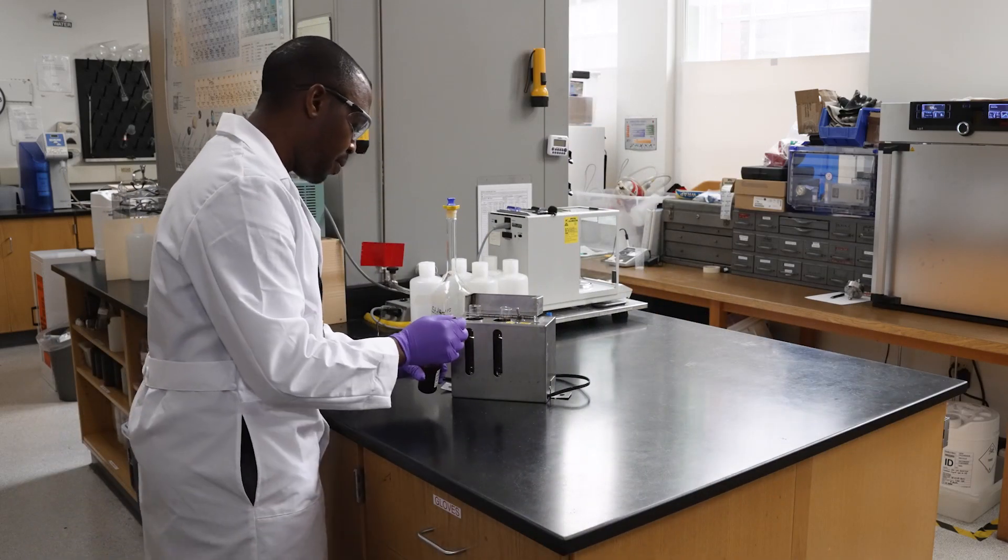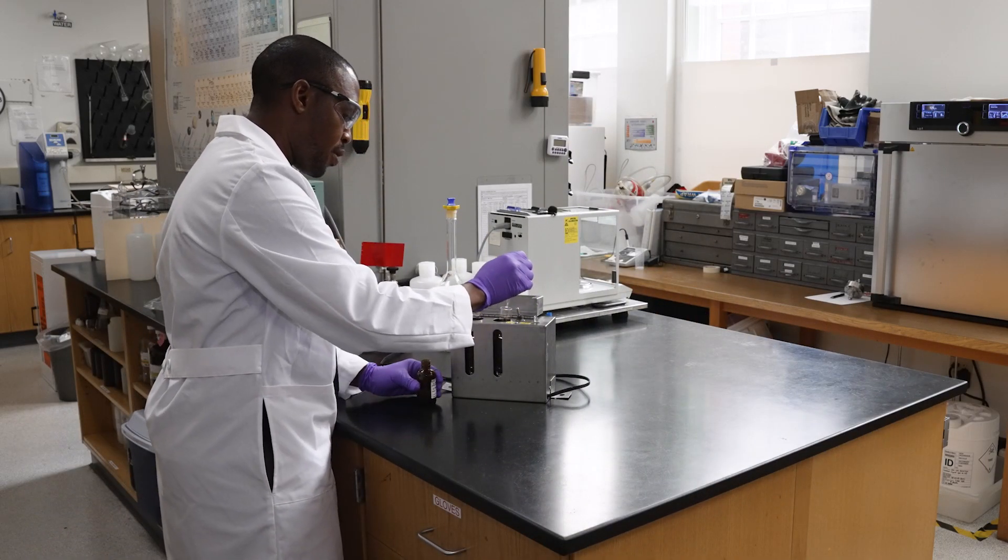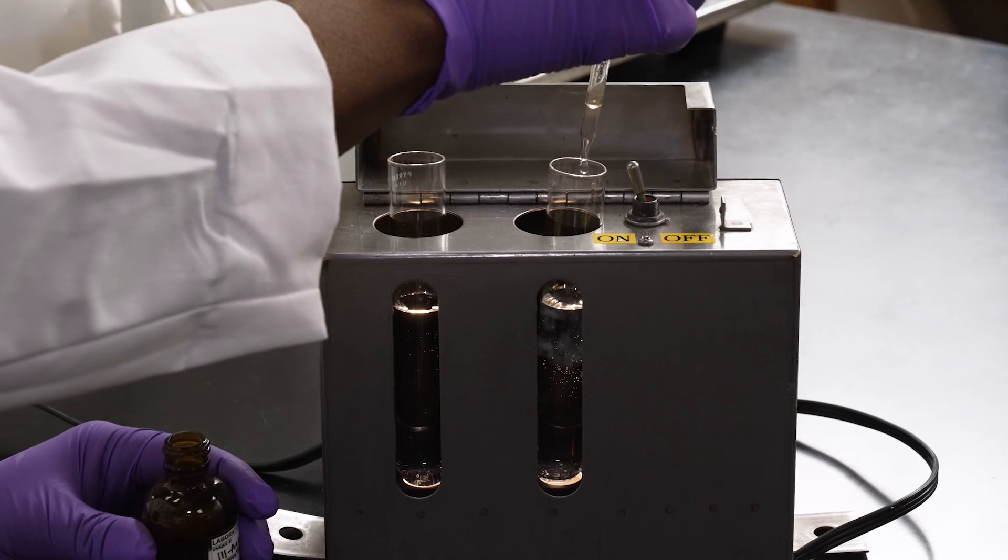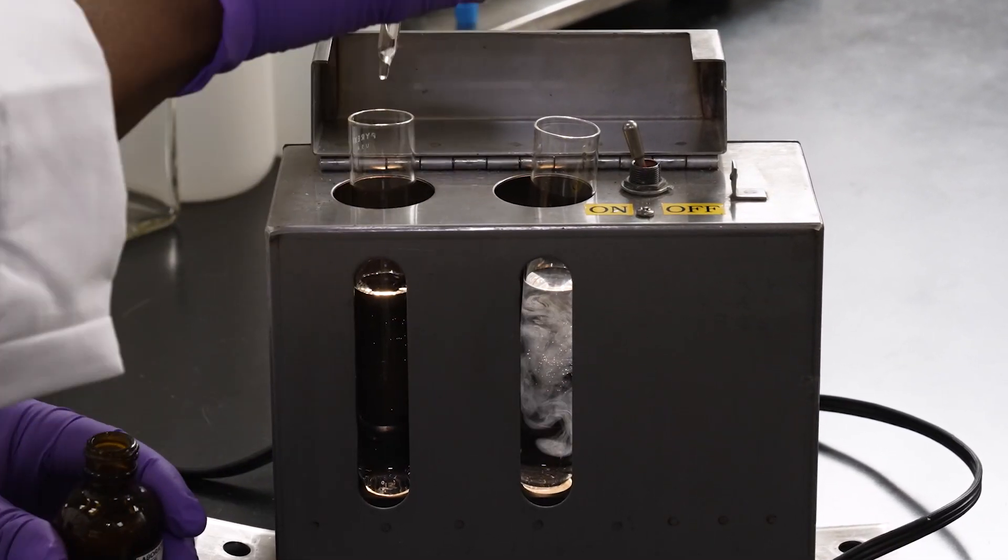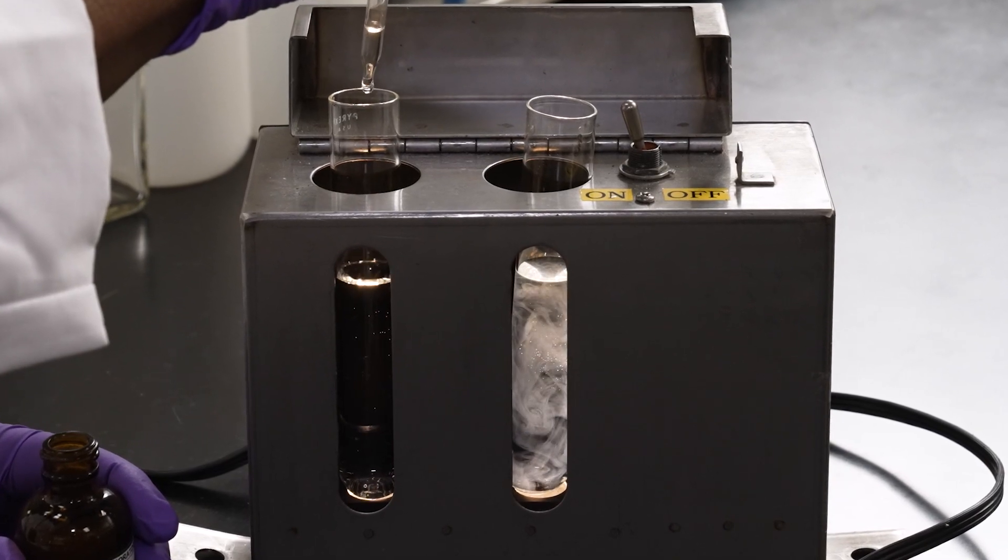Chloride is detrimental to metal surfaces, leading to corrosion and damage. In this quick test, if chloride is present, a white powder is formed, visible as cloudiness or turbidity.